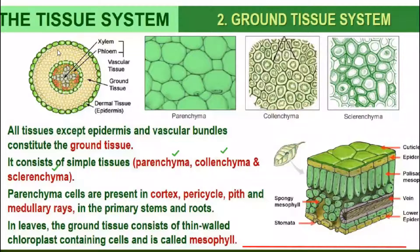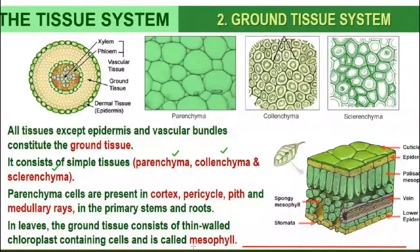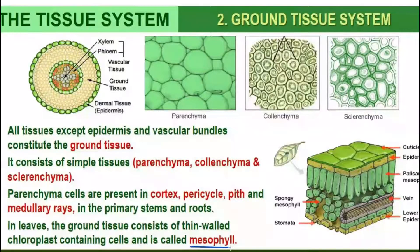The ground tissue system is also present in the leaves, but there it is named mesophyll. So the ground tissue system found in the leaves is called mesophyll.